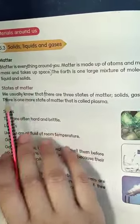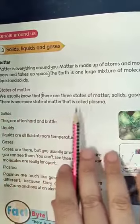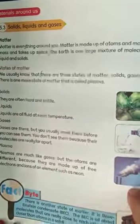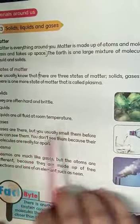There are three states of matter: solid, liquid, and gas. There is one more state of matter called plasma. Solids are hard and brittle. Liquids are fluid at room temperature. Gases are present but you cannot really see them because their molecules are far apart. Plasma is much like gases, but the atoms are made up of free electrons and ions of an element such as neon.